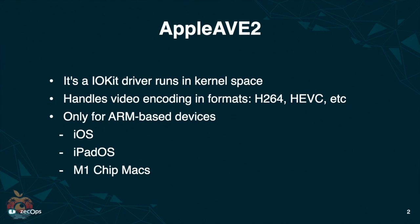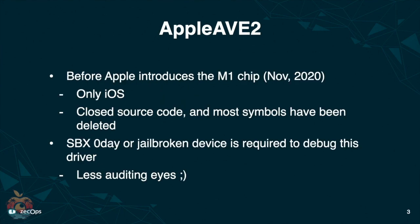Now let's take a look at this from the security perspective. Before Apple introduced the M1 chip, this video encoder driver used to only exist on iOS. Most of the symbols got removed. The entire driver got meshed together inside the iOS kernel cache. So it's a lot of work to sort out internal functions and re-symbolize the kernel cache. Furthermore, you need a sandbox escape or a jailbroken device just for debugging this driver — that makes it a much less attractive target.